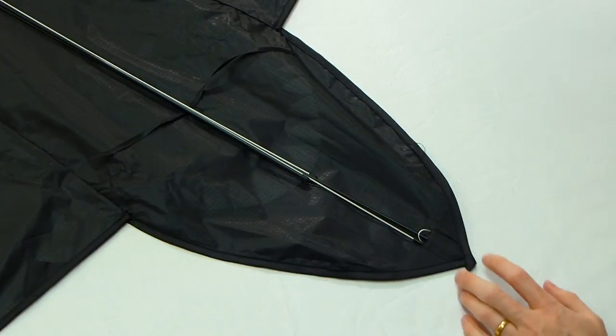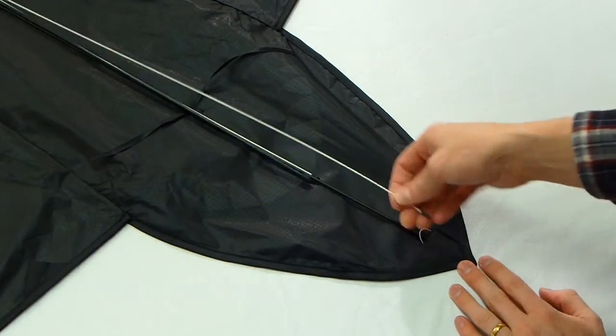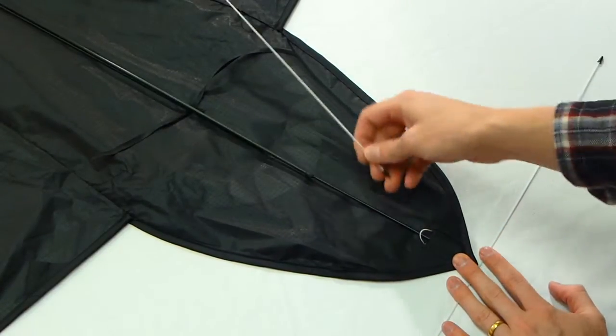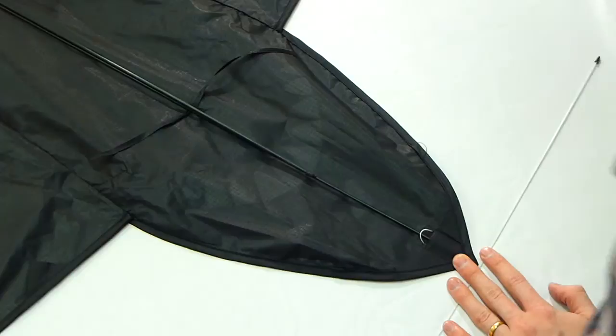We're going to start up at the head and work our way down. To get things ready, take the long white spar out. This is going to go into the head. Take the short white spar out and put it down by the tail.